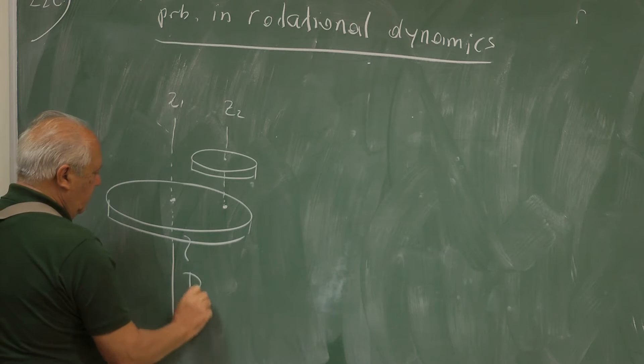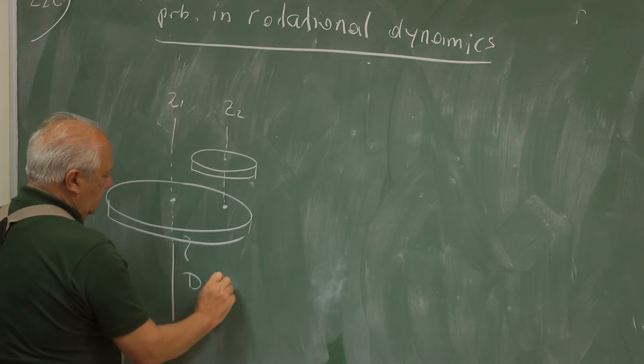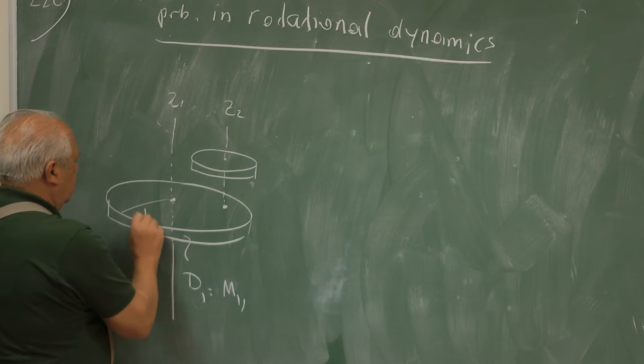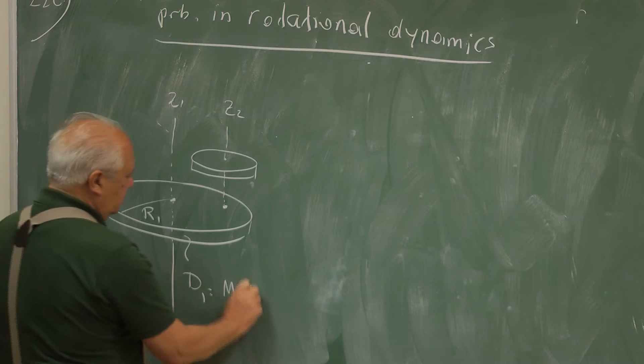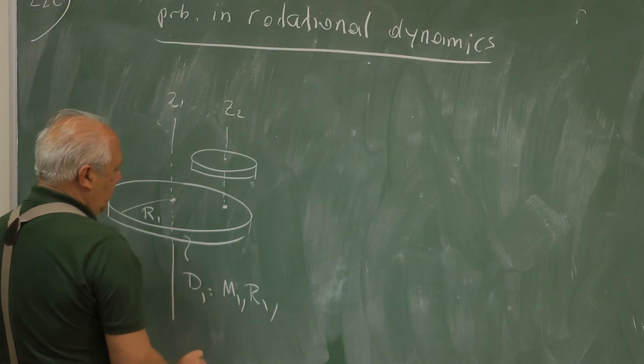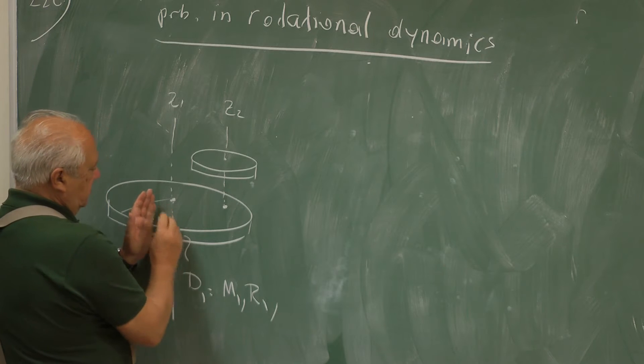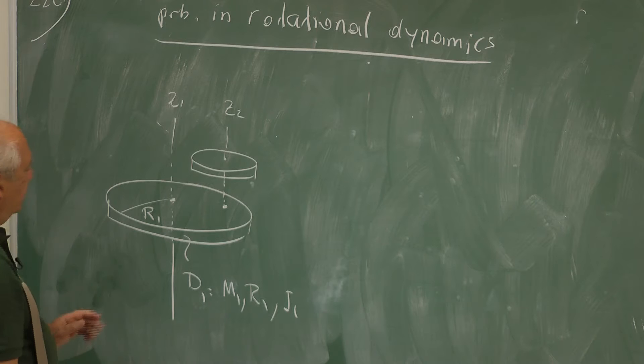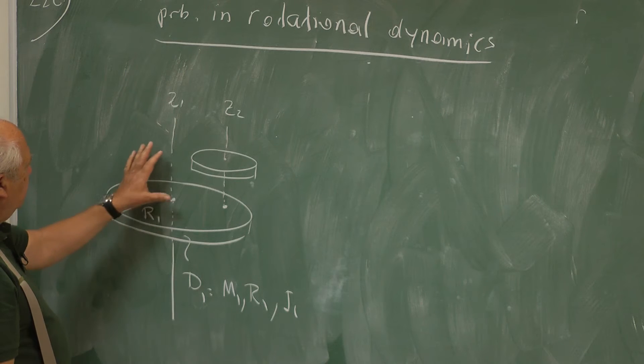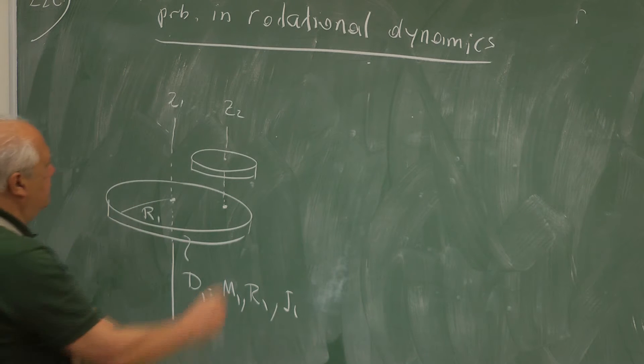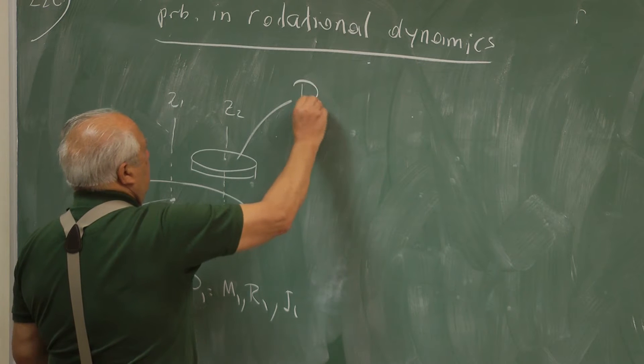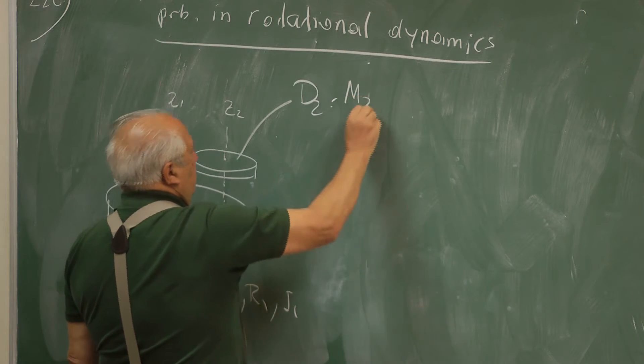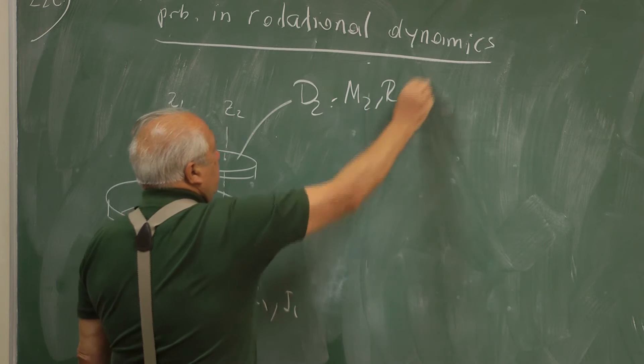Disk 1, this is disk 1, has mass M1, radius R1, and moment of inertia I1. Moment of inertia to rotate about the axis Z1. Similarly, this is disk D2, M2, R2, I2.